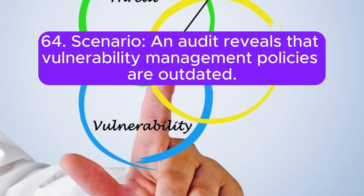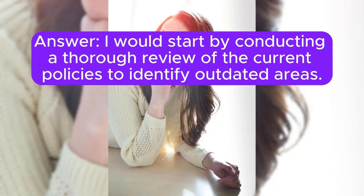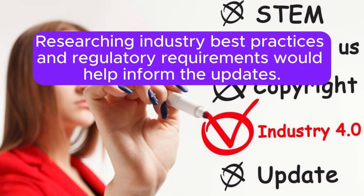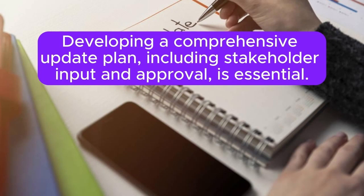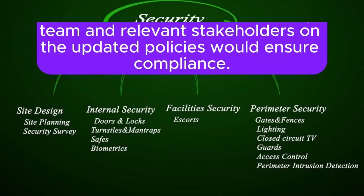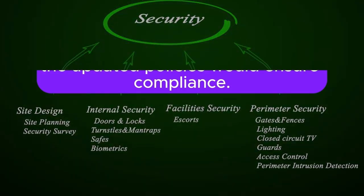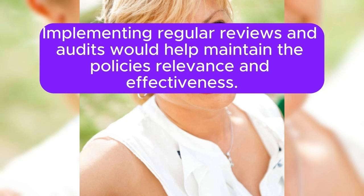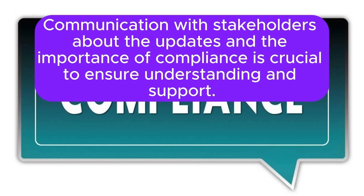Scenario 64: An audit reveals that vulnerability management policies are outdated. How do you update and ensure compliance? I would start by conducting a thorough review of the current policies to identify outdated areas. Researching industry best practices and regulatory requirements would help inform the updates. Developing a comprehensive update plan including stakeholder input and approval is essential. Providing training for the security team and relevant stakeholders on the updated policies would ensure compliance. Implementing regular reviews and audits would help maintain the policy's relevance and effectiveness. Communication with stakeholders about the updates and the importance of compliance is crucial.